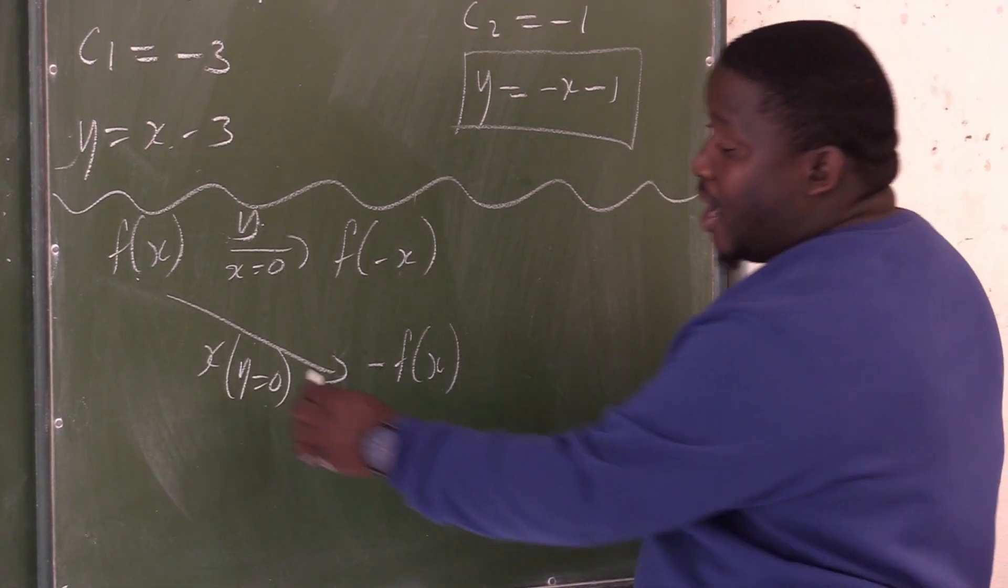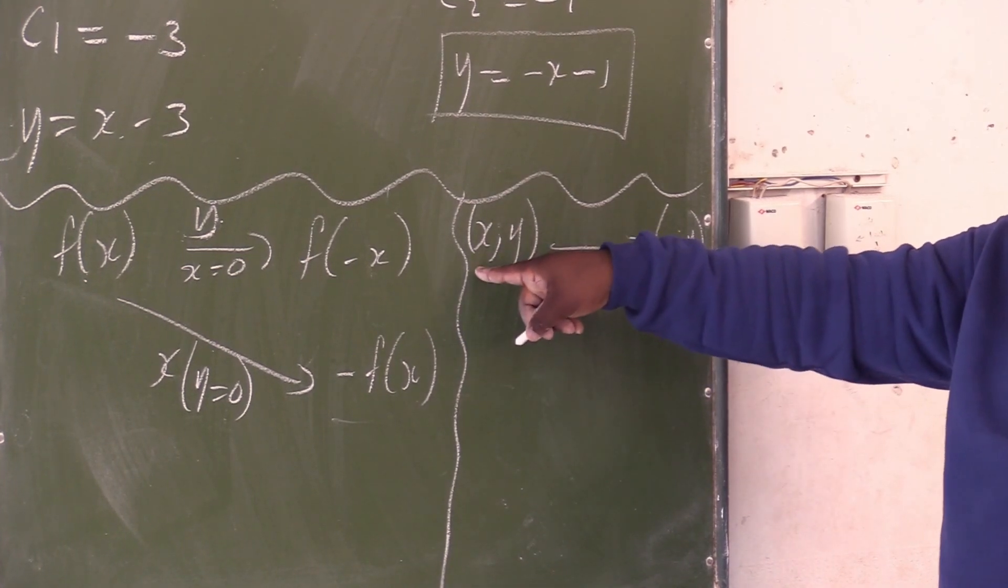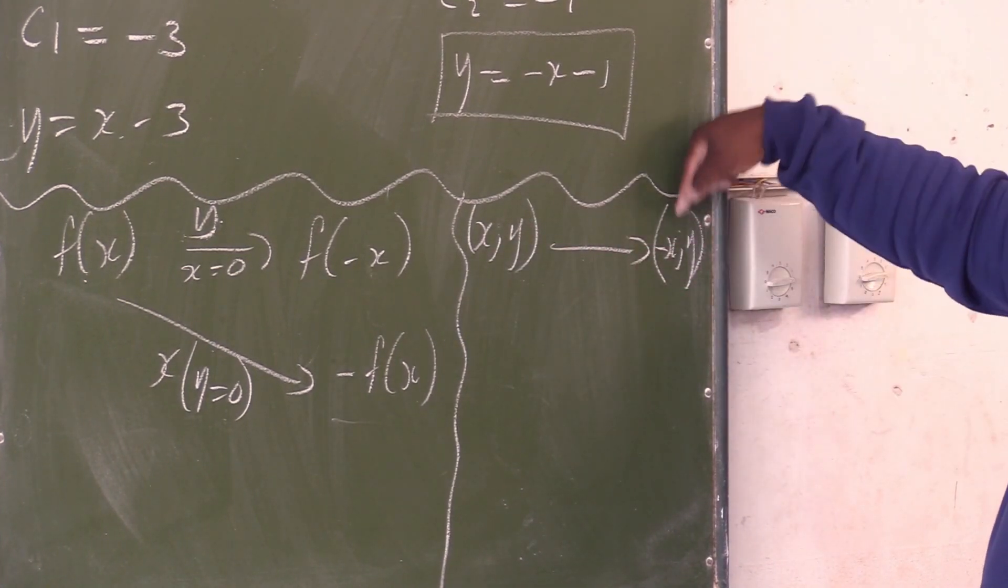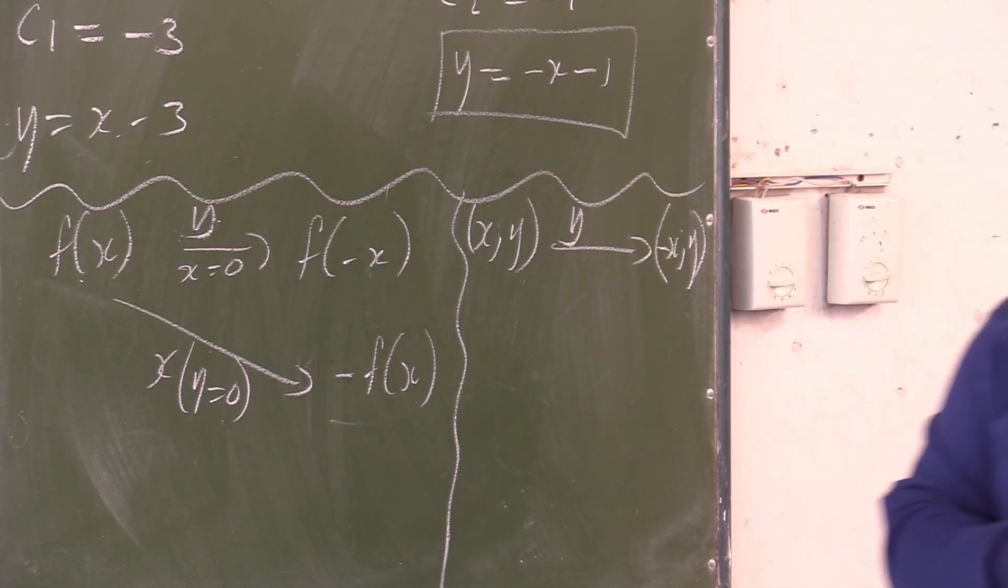A reflection along the x-axis and the reflection along the line y equal to 0. So if you see this movement from here to here, it means this point was reflected along the y-axis.